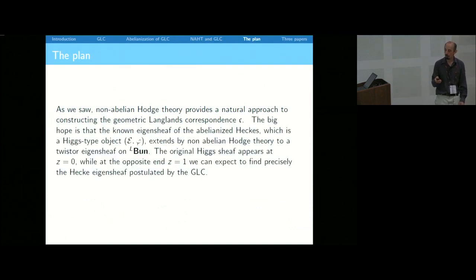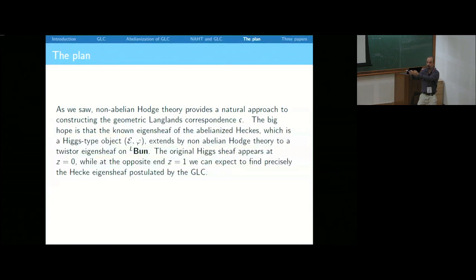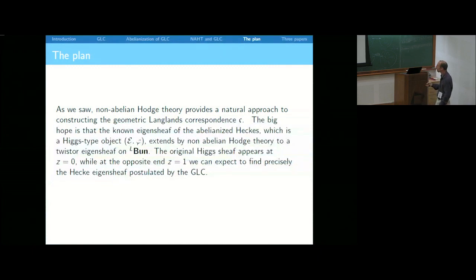Here's the plan. We start from a local system and try to spread it out using the abelian Hodge theorem, conjugated by non-abelian Hodge theory. Step one: start with the local system on the curve. Step two: use non-abelian Hodge theory to convert it to a Higgs bundle on the curve. Step three: use the abelian case of geometric Langlands to spread that over the spectral Jacobian. Step four: push that down to Bun. We end up with something on Bun and then use the higher-dimensional version of Hodge theory to twist that Higgs bundle back to a local system.